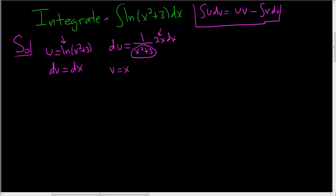So we don't have to write this down again. Let's just call this i. So i, it's uv: x natural log x squared plus 3 minus the integral of v du. So v is right here and du is here. So v du looks like it's going to be 2x squared over x squared plus 3 dx.